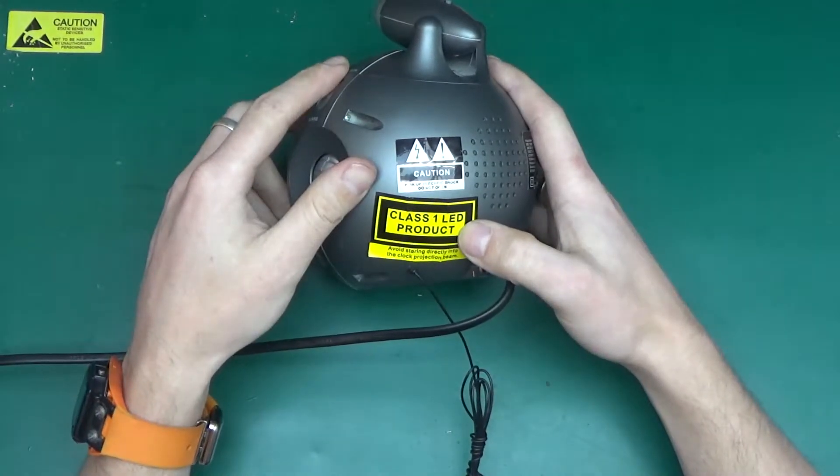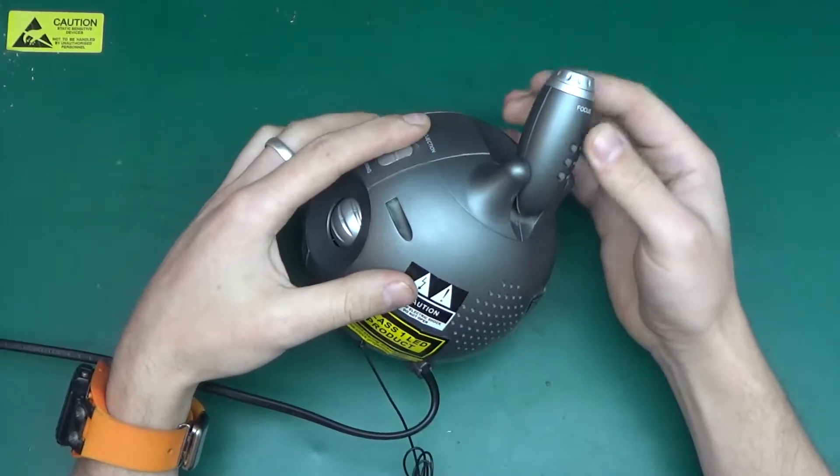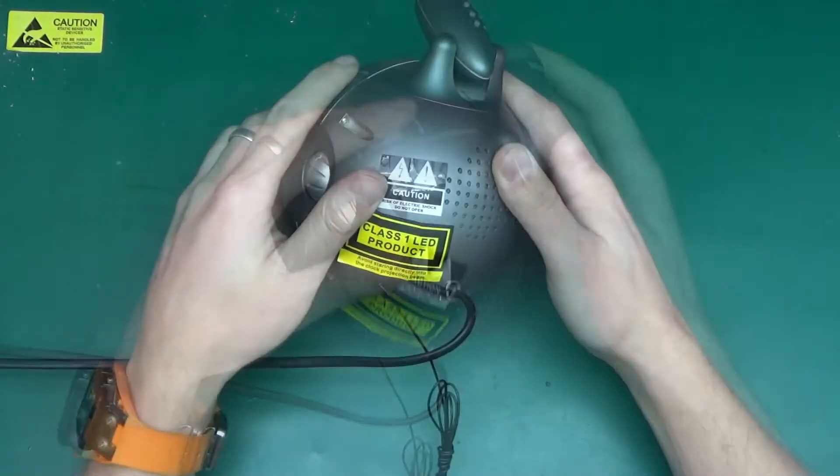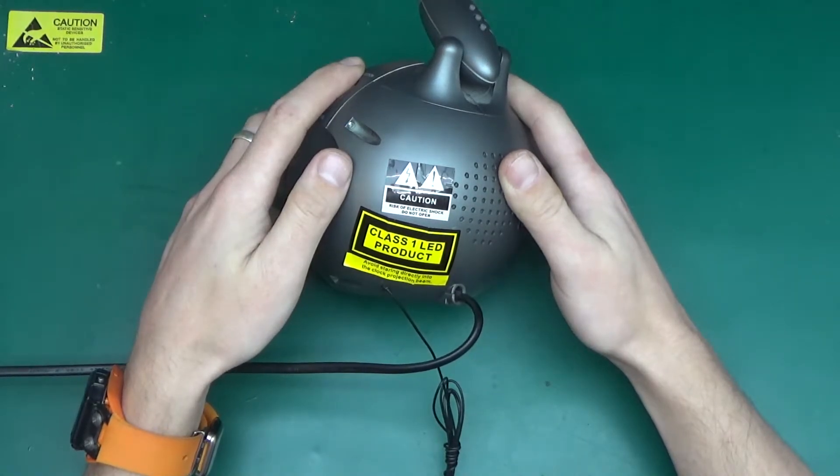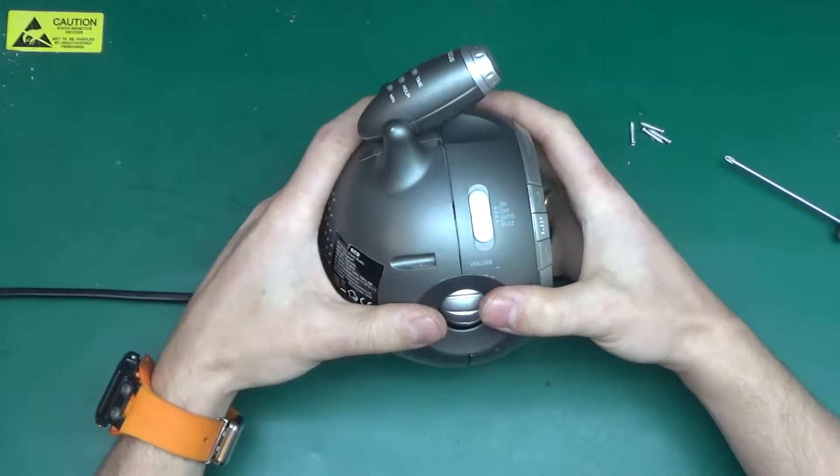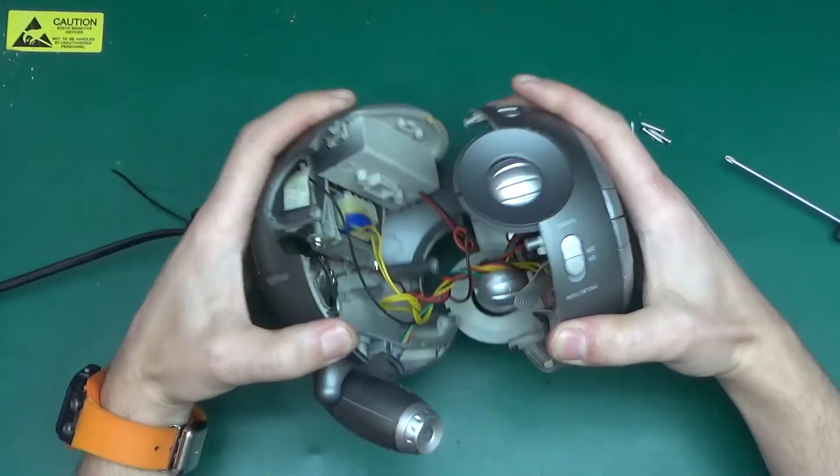It's got a sticker that says class 1 LED product. That would indicate that the projection beam is an LED rather than a laser. I've never actually heard of class 1 LED product. And after removing the four self-tapping screws, I think this should fall apart. It does!